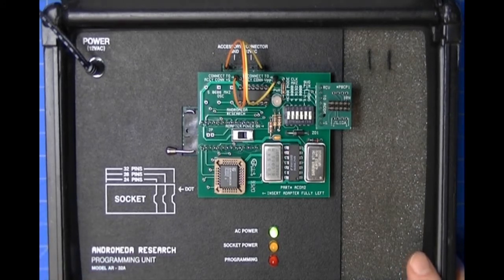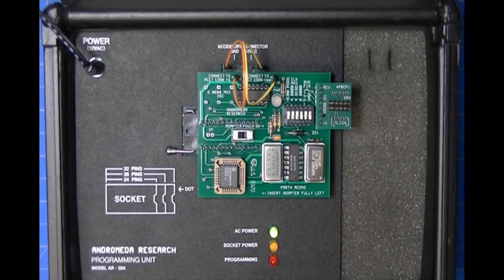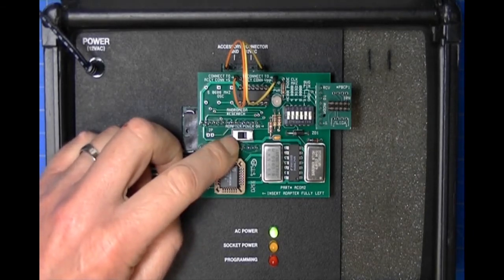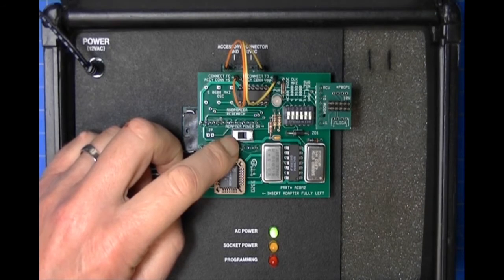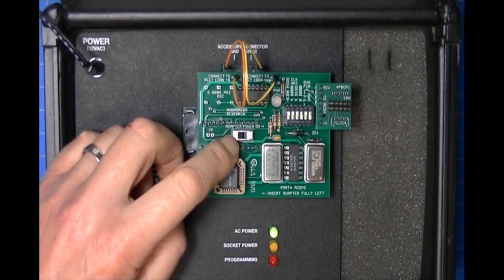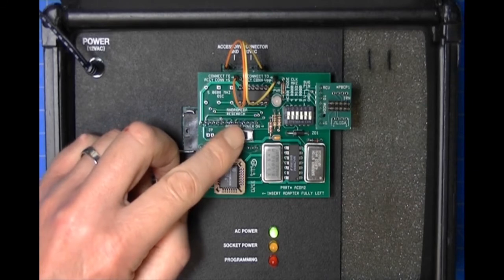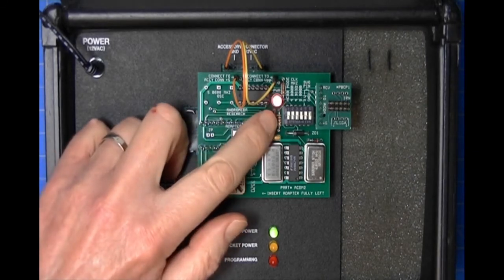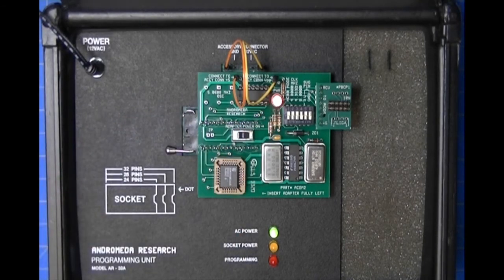This adapter supplies power to the external assembly, whatever module you're working on. The way that it supplies power is we literally have an on-off switch right here. Once the probe set is connected to the part and to the ACOM 2, you turn on the switch and you'll see that the red LED lights, indicating that it's now powering the external assembly.